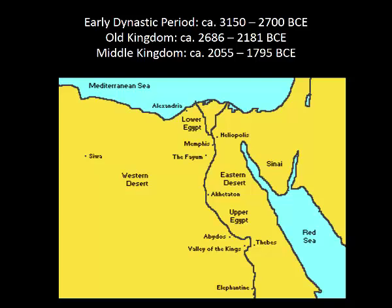If you look at the dating of these periods, you can see that the dating is a little inconsistent — there is overlap and gaps. The reason is that truly accurate dating of Egyptian art was done dynastically along the lines of affiliated ruling groups. There were 31 dynasties, but it's easier for newcomers to use five broader chronological designations rather than 31 specific periods.